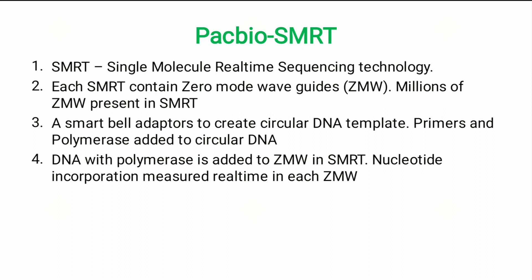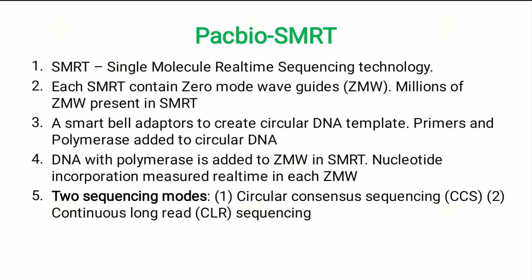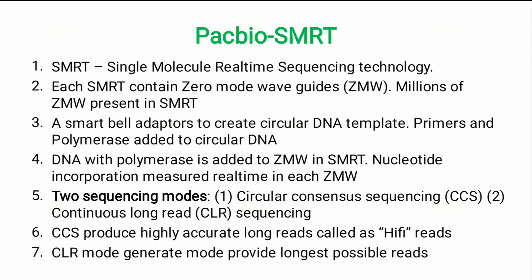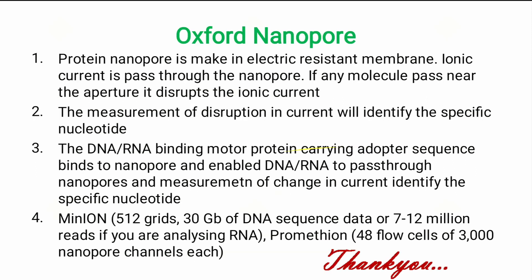Nucleotide incorporation is measured in real-time within the Zero Mode Waveguides. Two sequencing modes are present in this platform: one is Circular Consensus Sequencing, or CCS, and the second is Continuous Long Read, or CLR sequencing. CCS produces highly accurate long reads called HiFi reads, while CLR mode generates the longest possible read lengths. Next, we will see the Oxford Nanopore method.